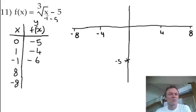I'm going to 8 because I can cube root 8. So what's the cube root of 8? The cube root of 8 is 2. When I take away 5, I'll get negative 3.